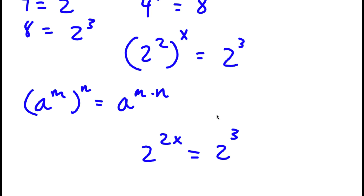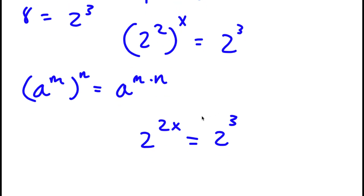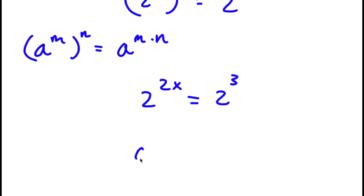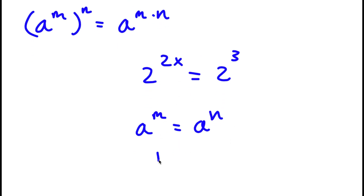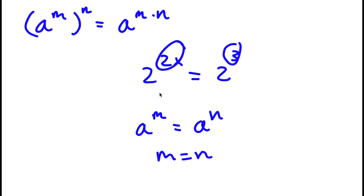Now, if I have something in the form a to the power of m is equal to a to the power of n, then this means that m is equal to n. So in this case, 2x is equal to 3.